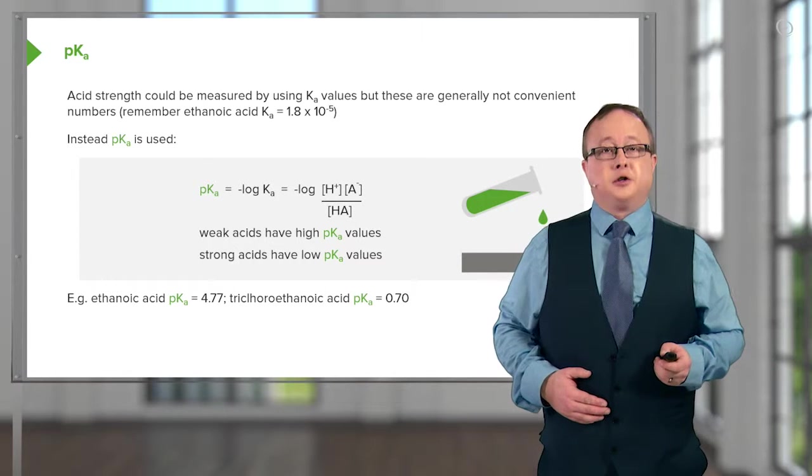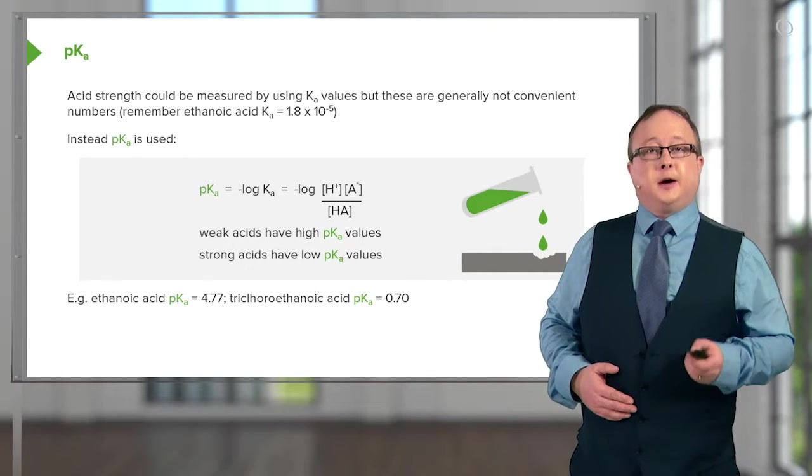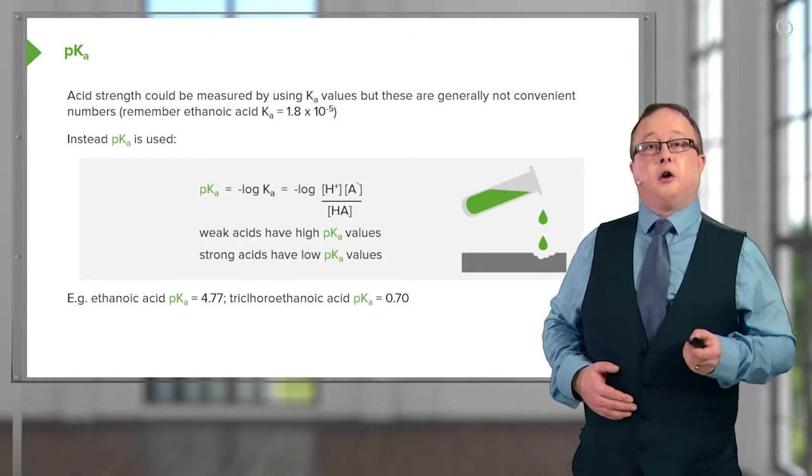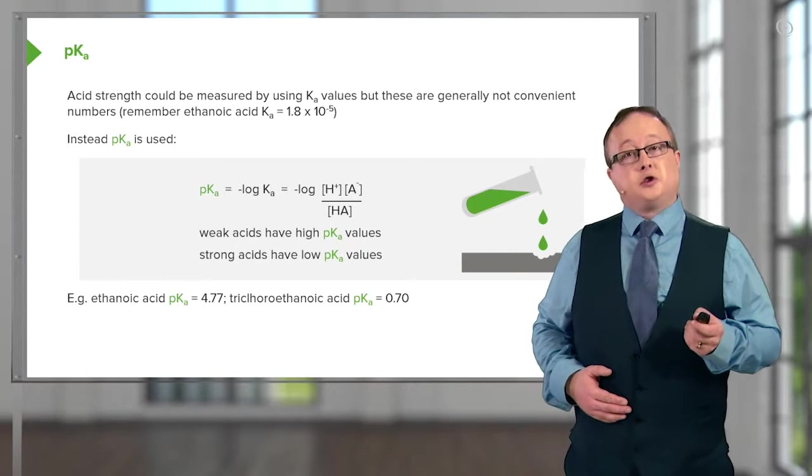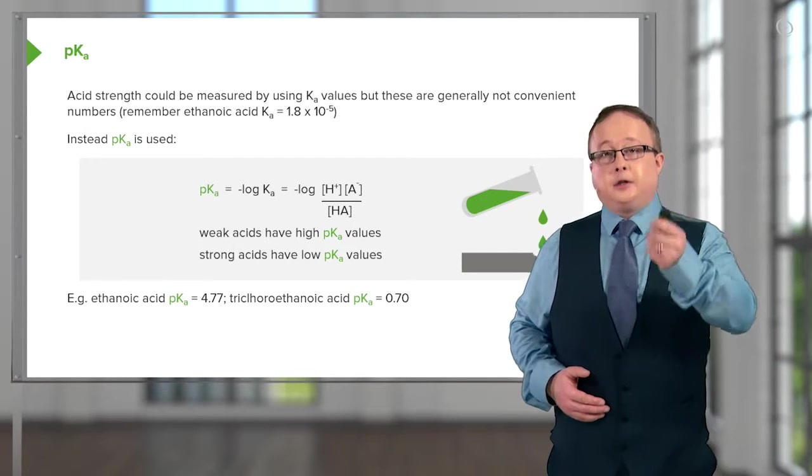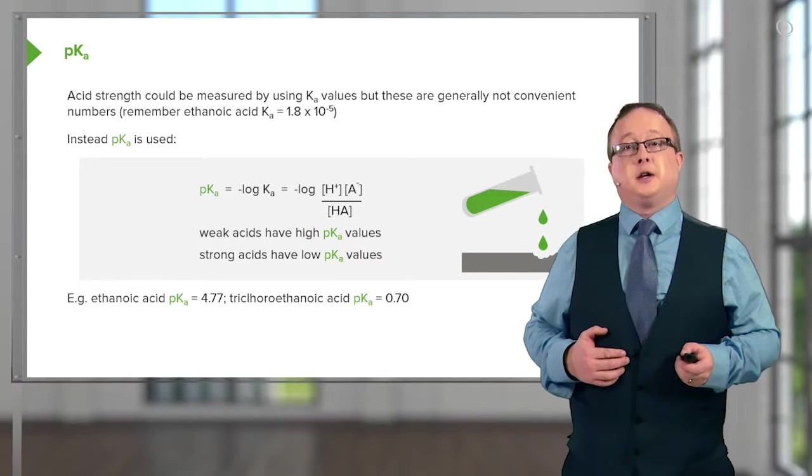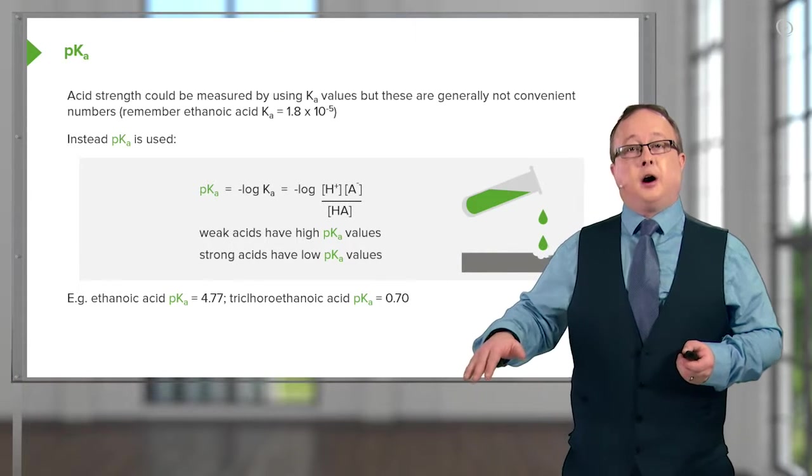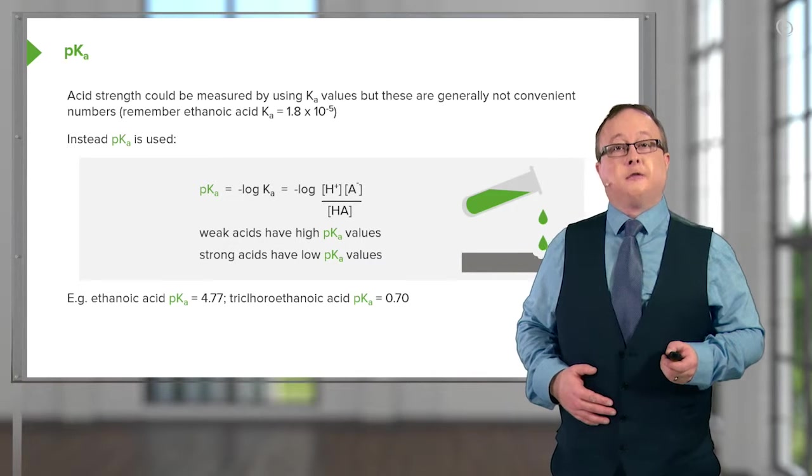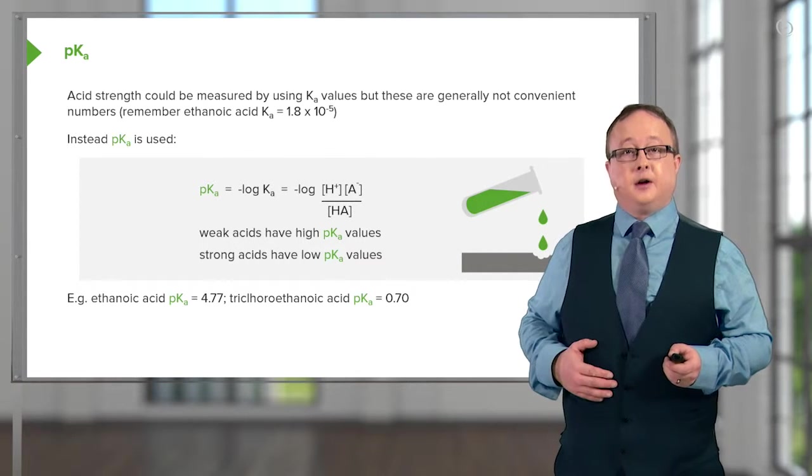If we look at this equation, what we mean is, by taking pKa, we are taking the negative log to the base 10 of the concentrations of H⁺ multiplied by our conjugate base A⁻, divided by the non-dissociated concentration of our acid HA.